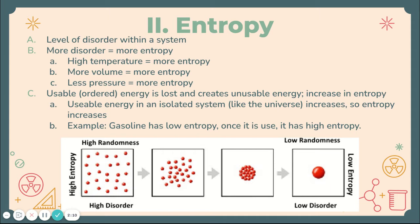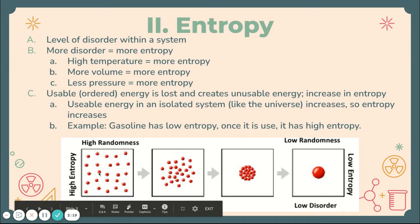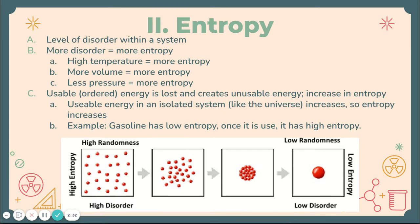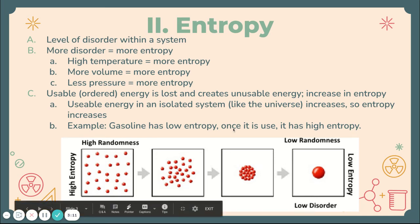The most disorder means the most entropy. In this picture, you can see the levels of entropy — high randomness on the left has the most entropy, and low randomness has the least. It's a sliding scale. Things that cause more entropy — more disorder within a system — are high temperature, more volume, and less pressure. If you increase the temperature of gas molecules, they move faster, so there's more disorder. A bigger container gives gas more places to go. Releasing pressure is the same as giving it more volume, which increases the disorder and randomness of those molecules.